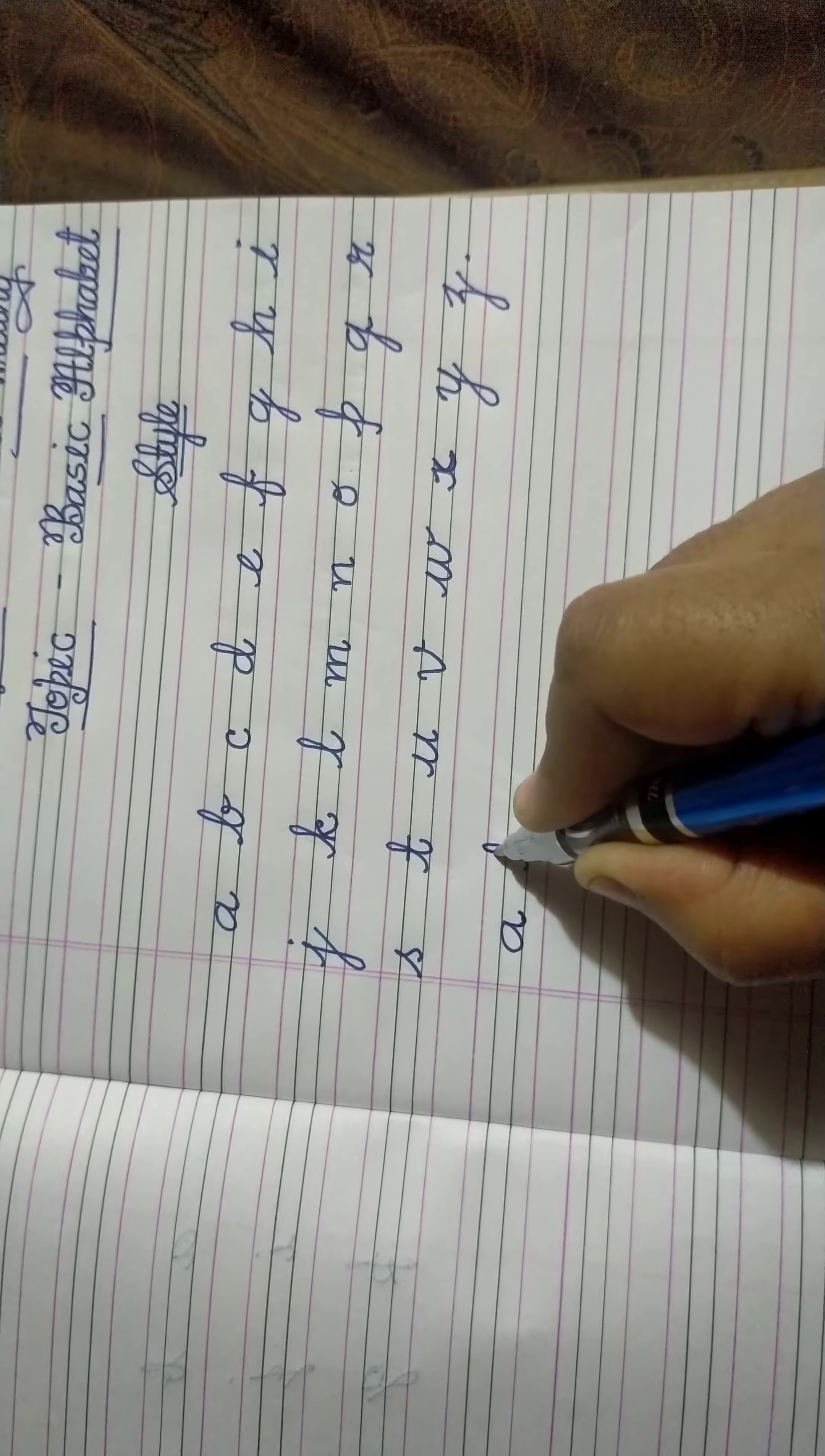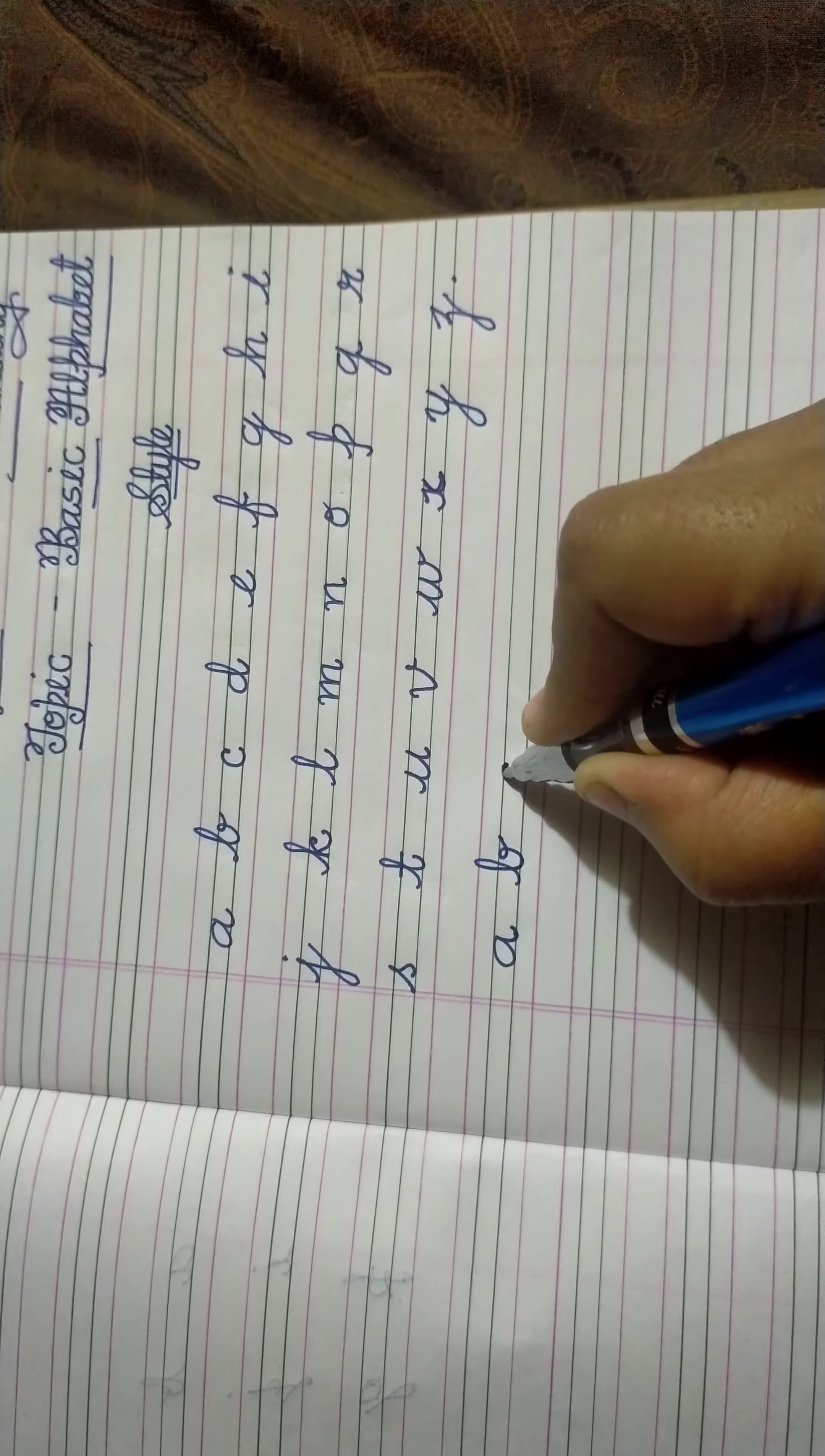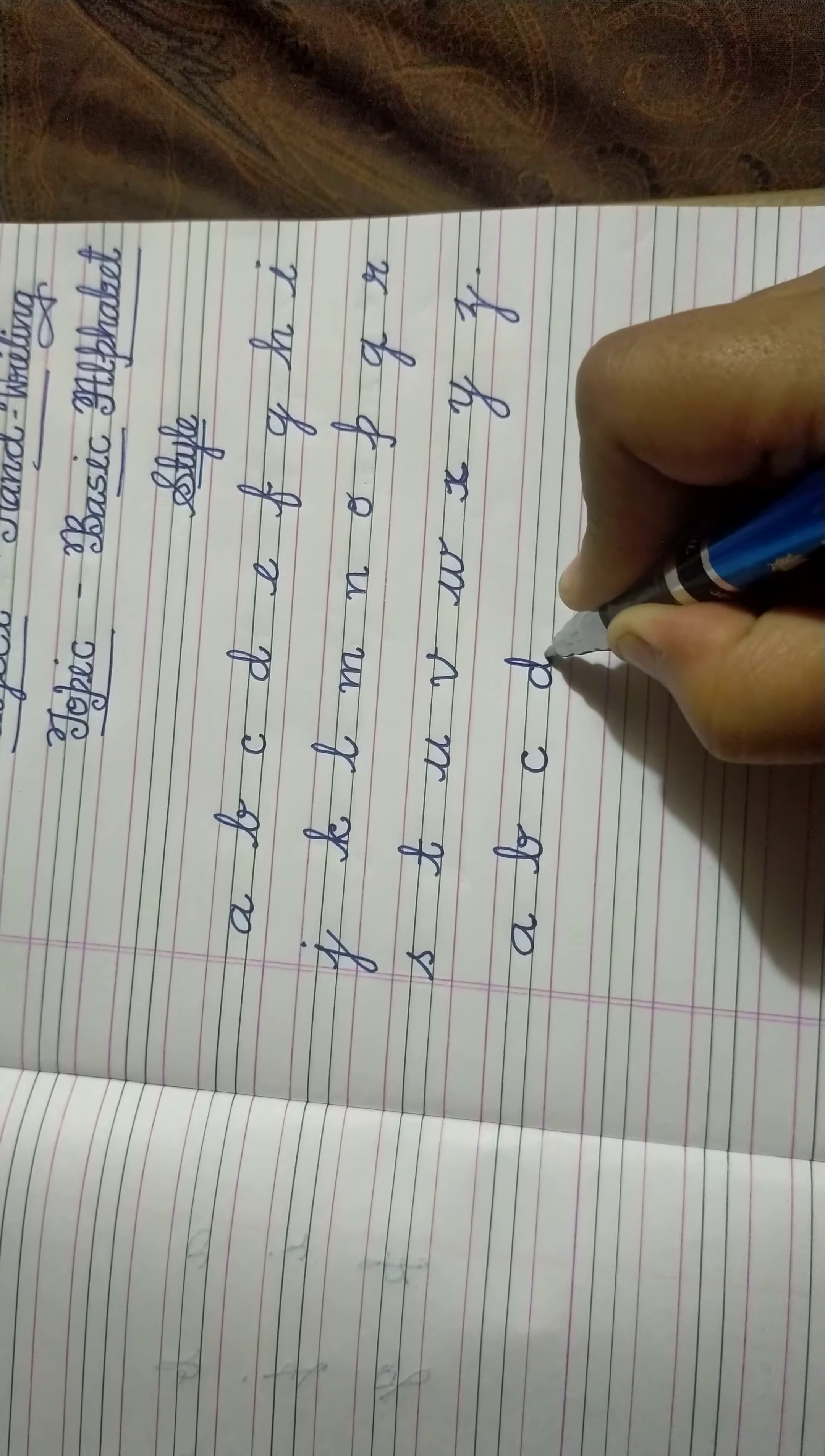Then C. For C, first a small dot, take this dot and give a curve - C. Now D. For D, make a round, take a curve and again a curve.